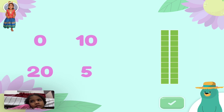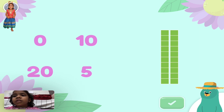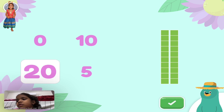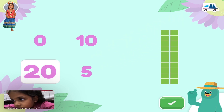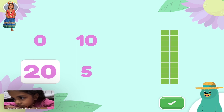Don't count each block in the rods. How many blocks are there total? Super! Each rod is made up of ten blocks. There are twenty total.